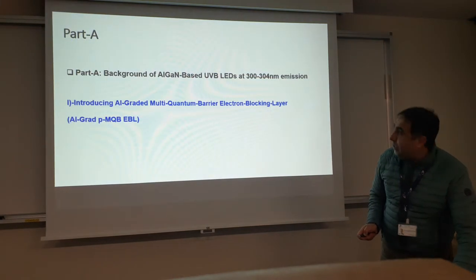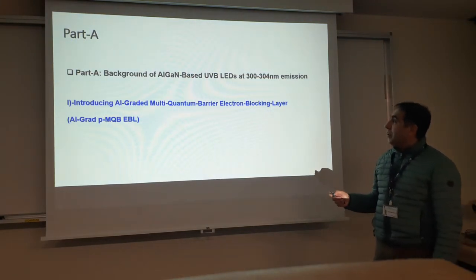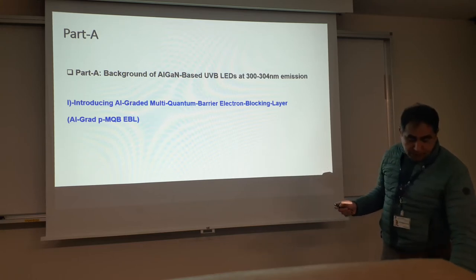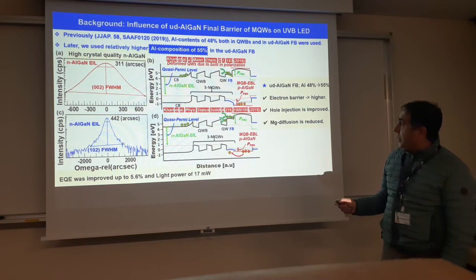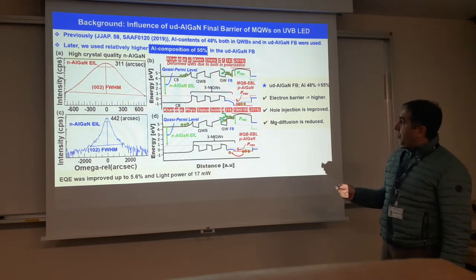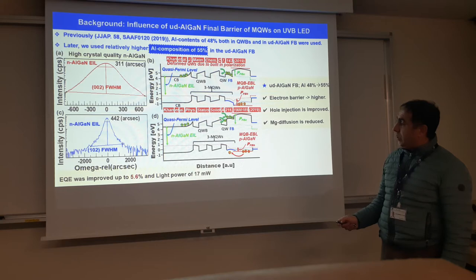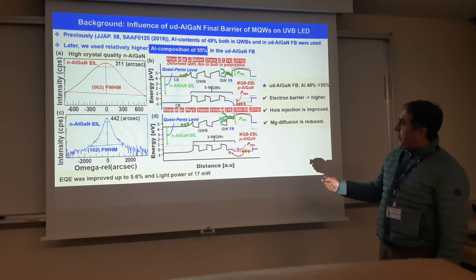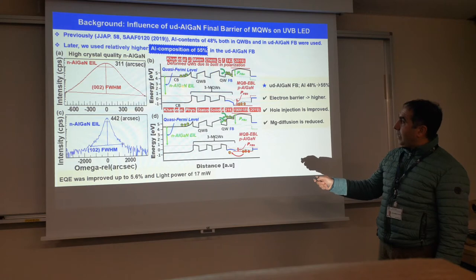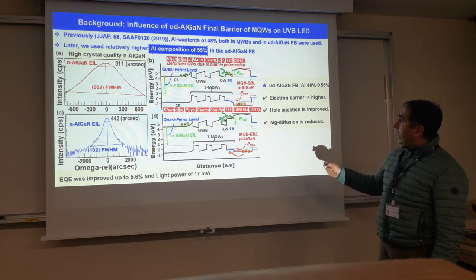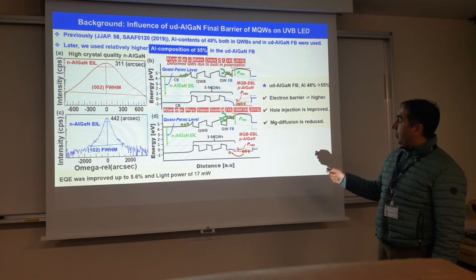Let me start our research work at RIKEN. Previously we got an EQE of 5.6% from our LED devices. The LED device structure is shown here — here is the energy band diagram, here is the N-side, and electron injection, and here is the P-side of the UV LED to complete the P-junction.